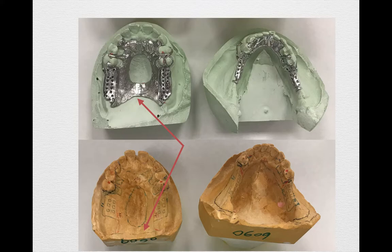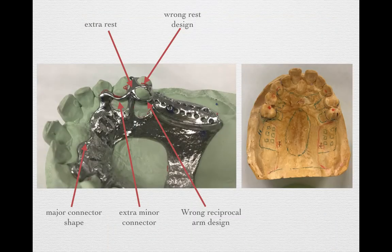You can see I point out that the major connector's distal extension is not really followed as instructed — it's much shorter. When we look into detail, we find more and more errors. The major connector shape in the anterior is not followed as drawn. The lab technician added extra rests, extra minor connectors, and even an extra round reciprocal design onto the tooth, which was not requested.